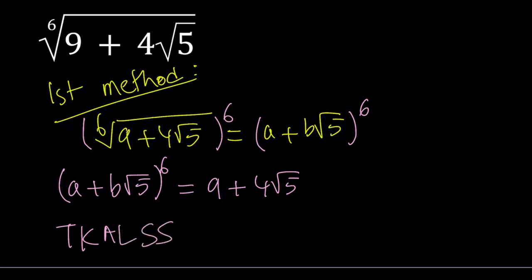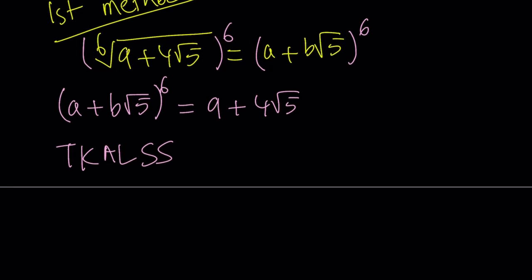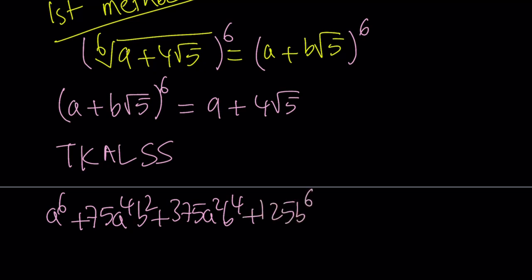To keep a long story short, tcals, I just made it up. We're going to expand this using the binomial theorem. This is what we're going to get. We're going to get a to the sixth power plus 75 a to the fourth b squared plus 375 a squared b to the fourth power plus 125 b to the sixth power.